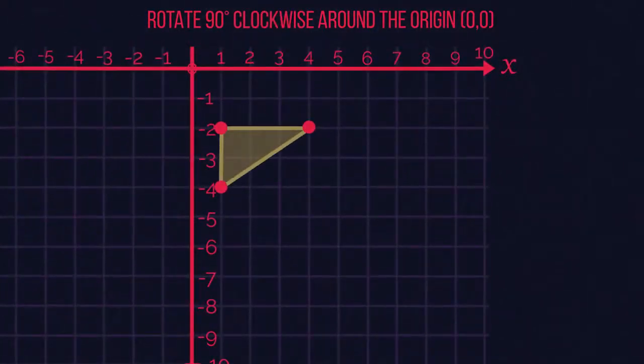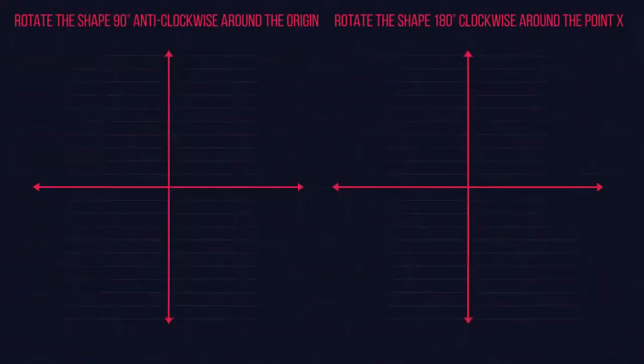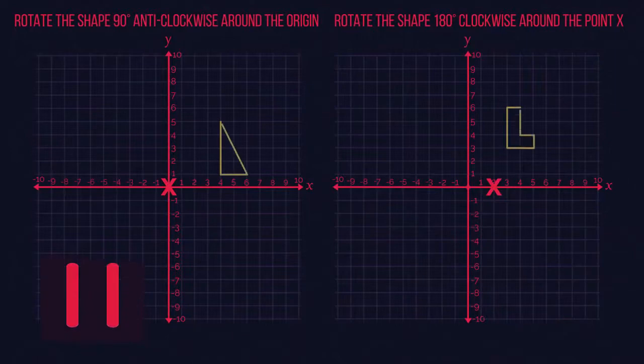If the question wanted us to rotate it 180 degrees, then we would have just done each point twice. So 90 degrees to where it currently is and then another 90 degrees. So let's carry on rotating our triangle. Give these two questions a go. Pause the video, work them out, and click play when you're ready.